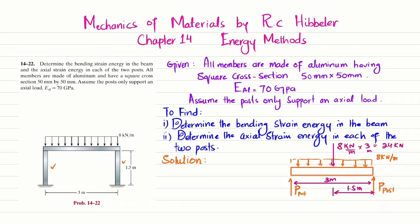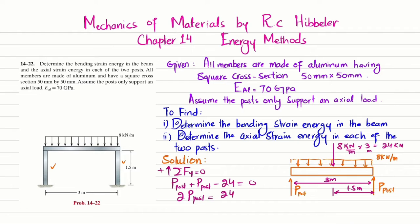Applying the equation of equilibrium: the sum of all forces in the y-direction equals zero, with upward forces taken as positive. So P_post plus P_post minus 24 equals zero. Therefore, 2 times P_post equals 24, meaning each post applies a 12 kN load on the beam.